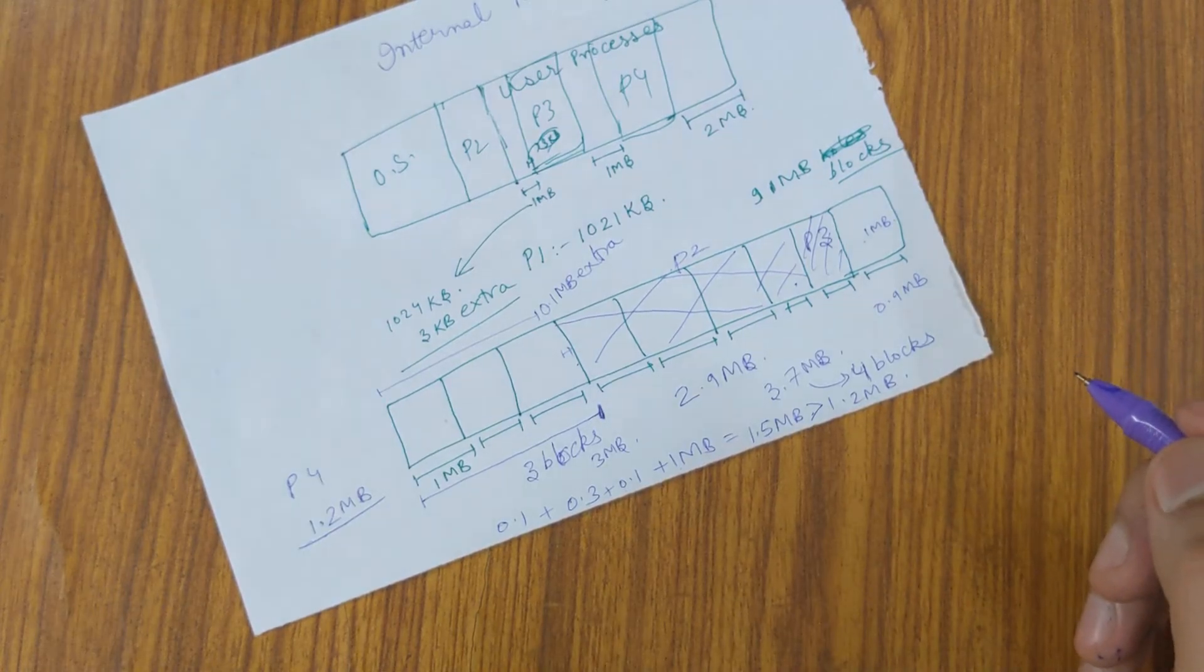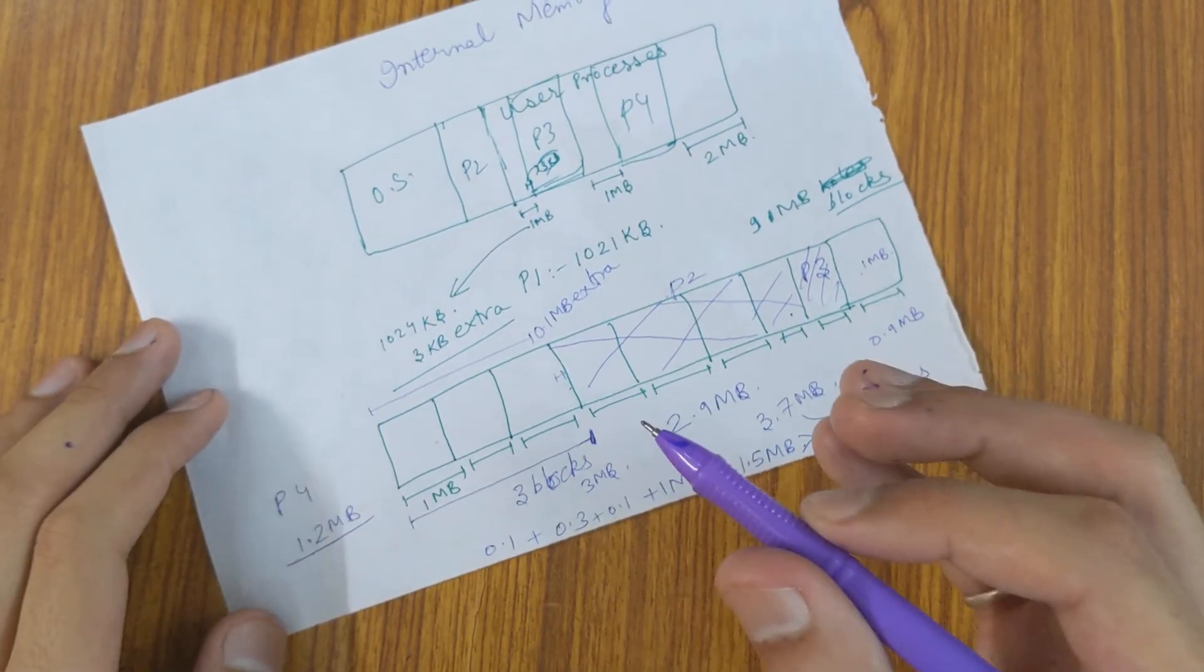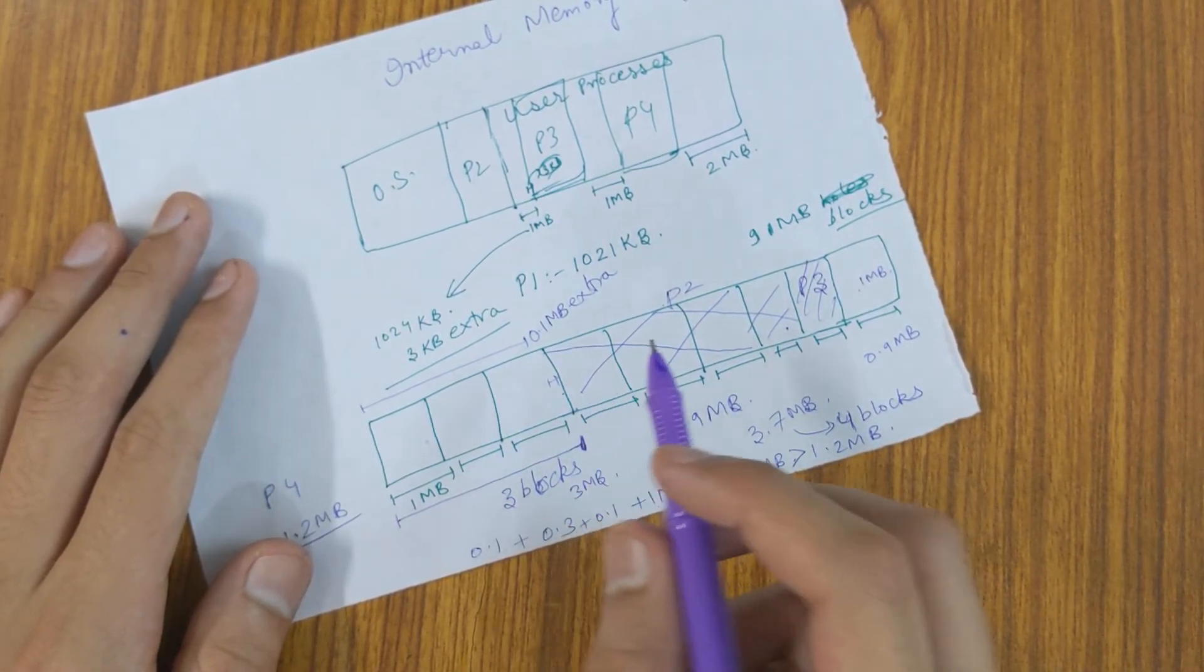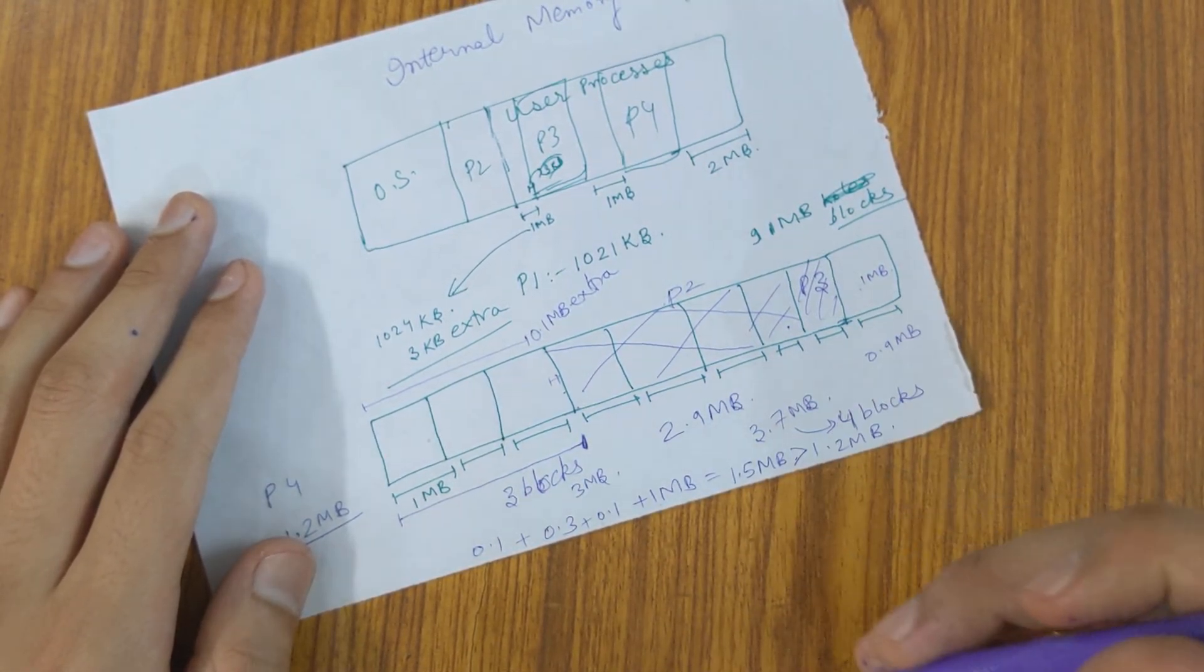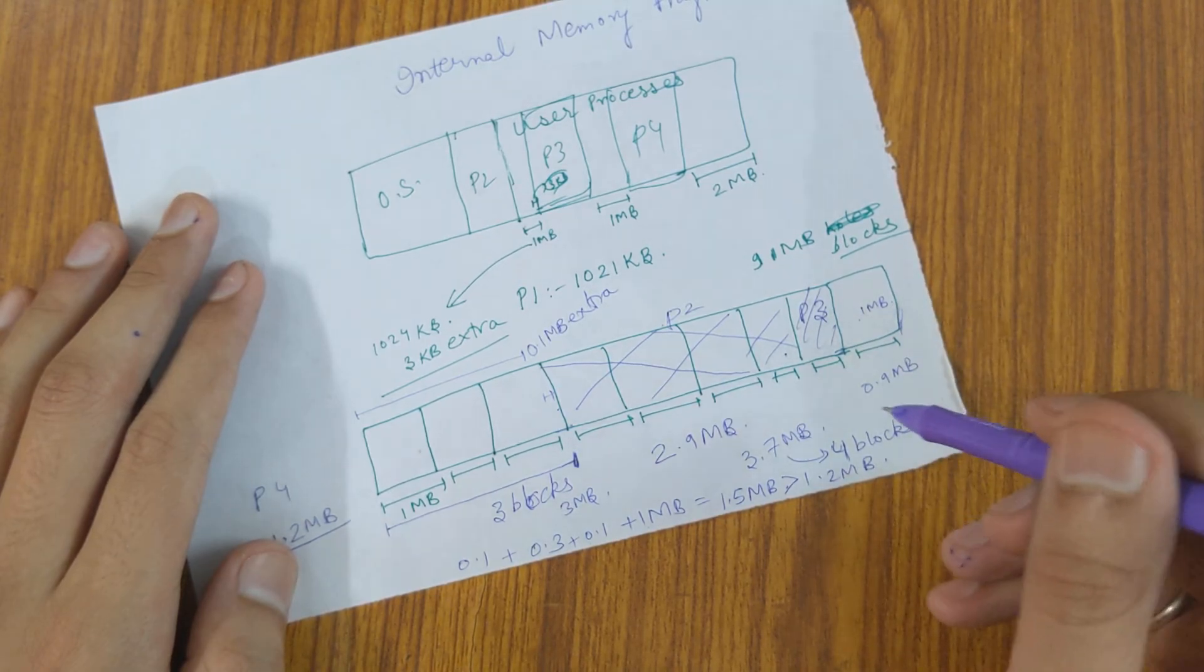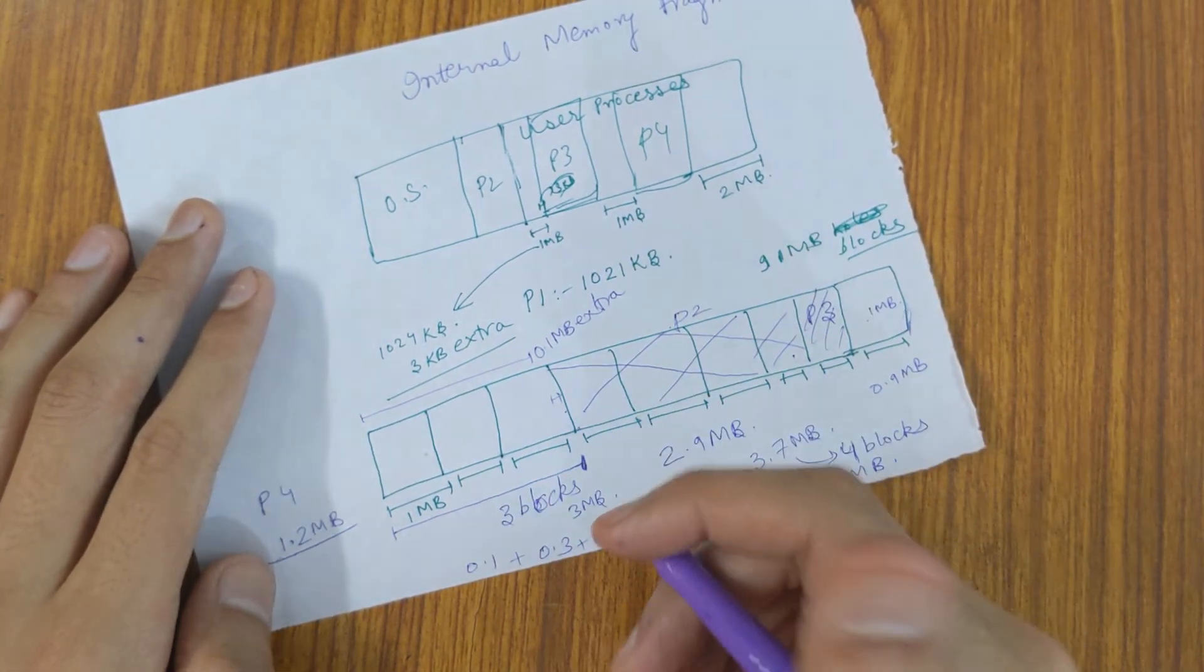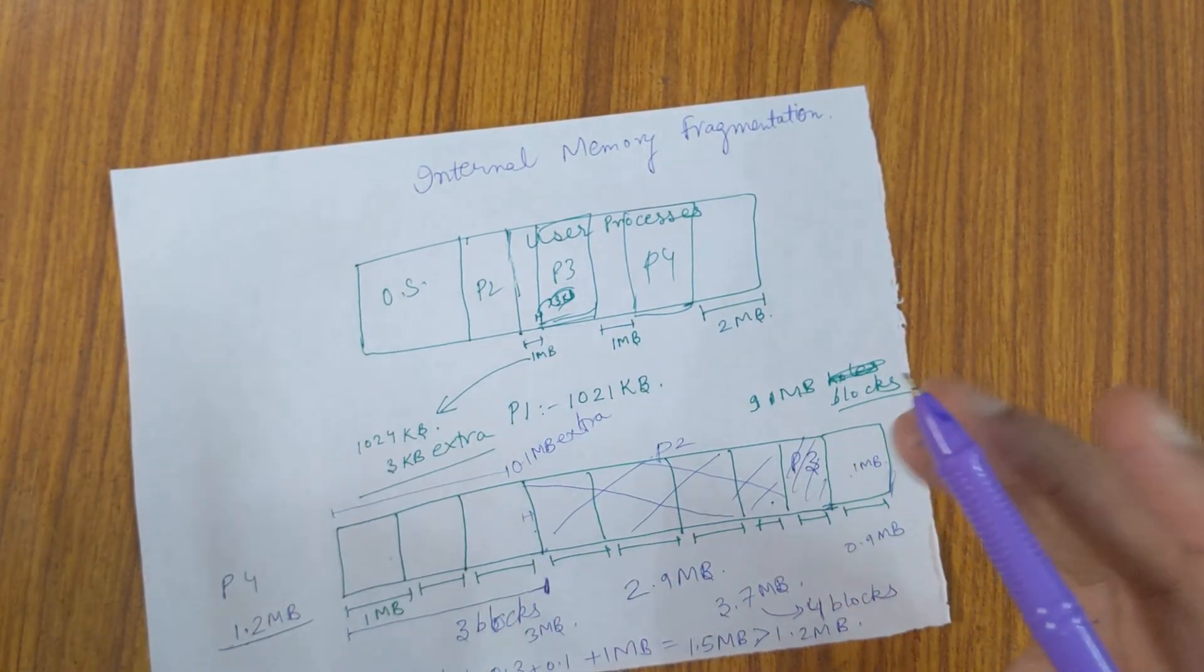In this case what happens is our memory required is present but it is fragmented internally because it is lying with other processes which don't even need it. And hence we cannot allocate this memory to our process P4. So, it's kind of a wasteful memory. This kind of situation is called internal memory fragmentation.